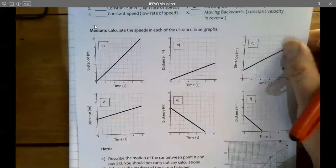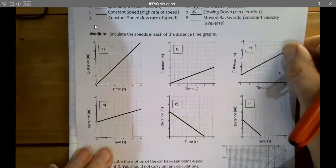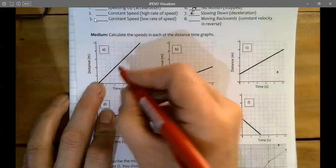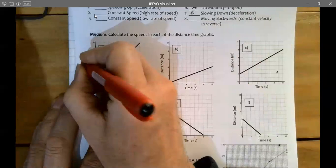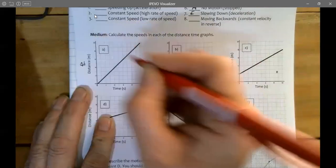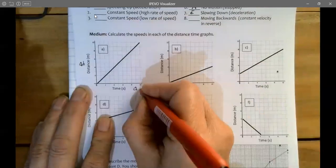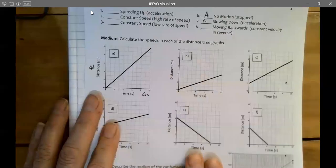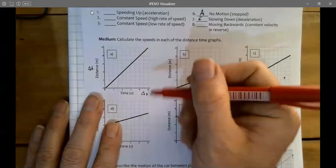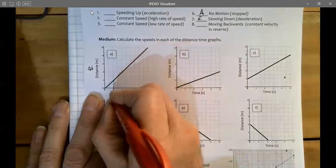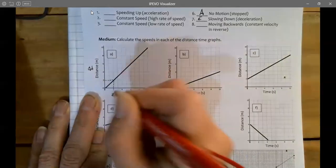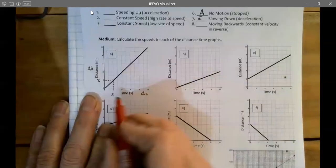Now we just move on to calculating the speeds. What we're going to do is choose a couple of points in our graph. We need to find the change in distance and the change in time. I'm going to take this point here and I'm going to move that across here to there.